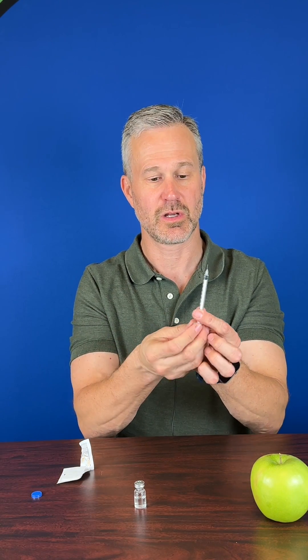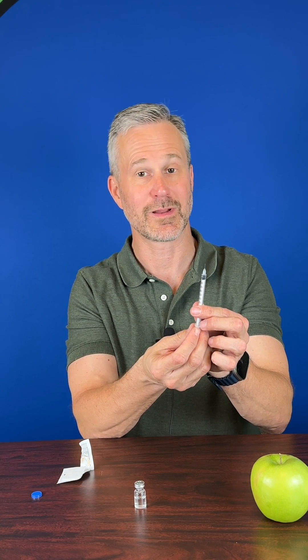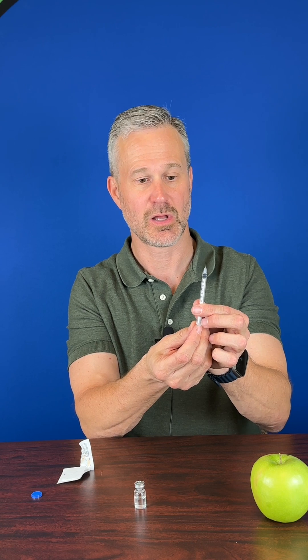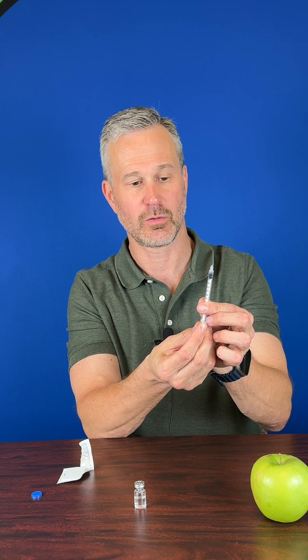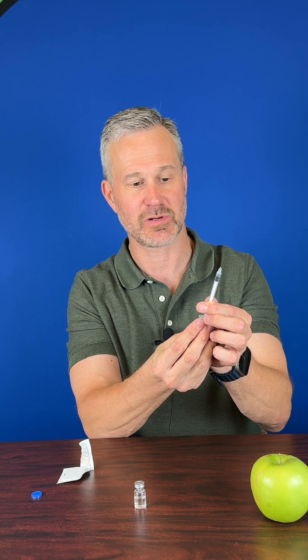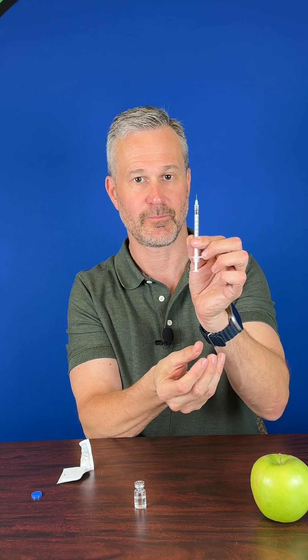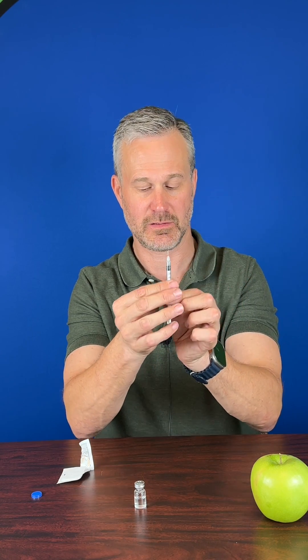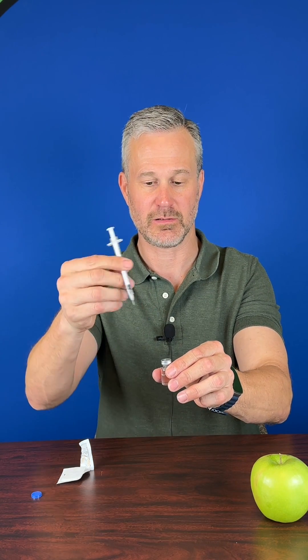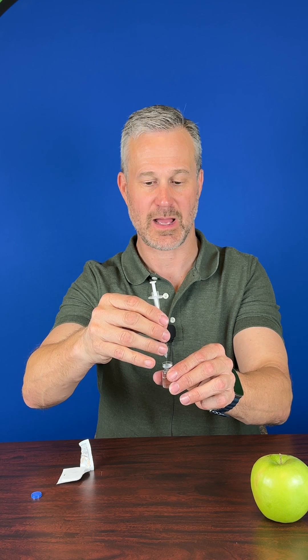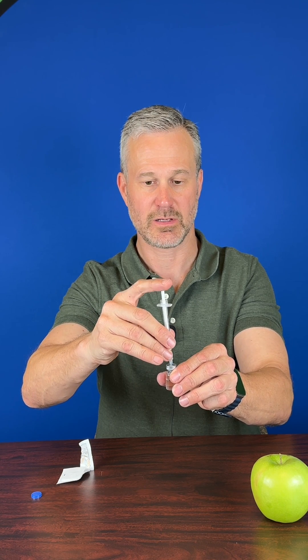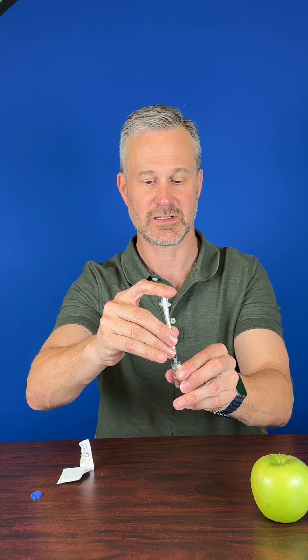Let's assume for your first injection you're going to inject 10 units of medicine. Pull the stopper back so it's at the 10 mark. Once you do that, push it through the stopper and inject that air of 10 cc into the vial. Turn it over.